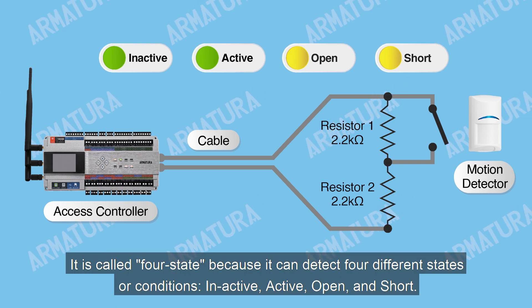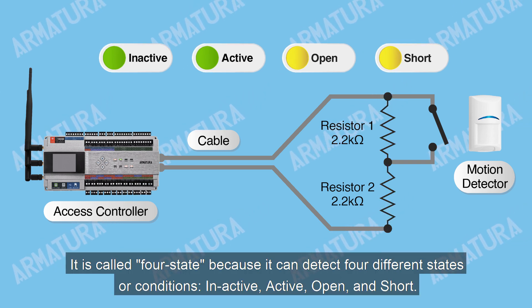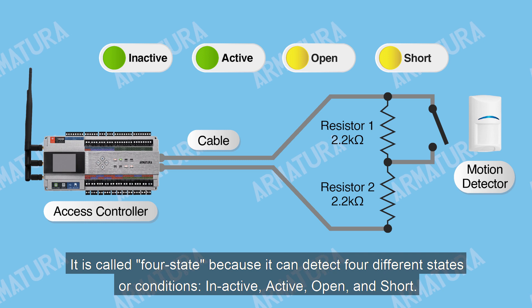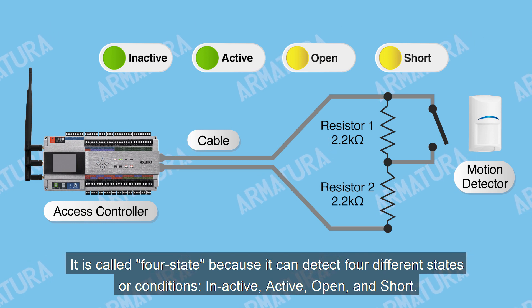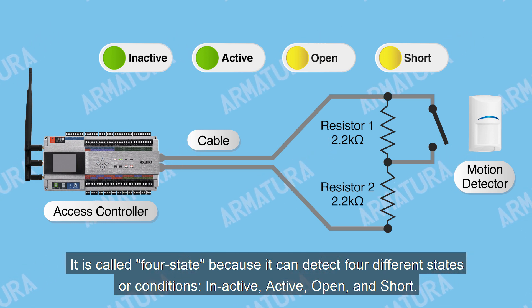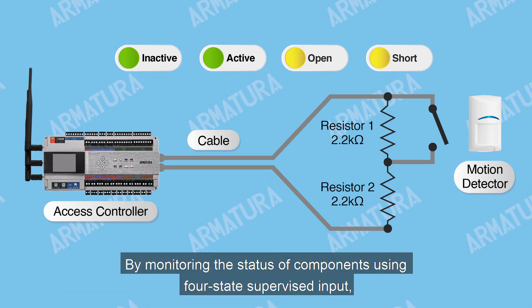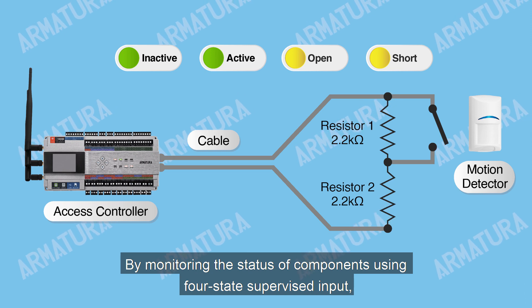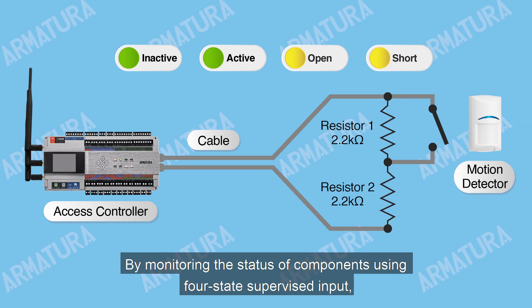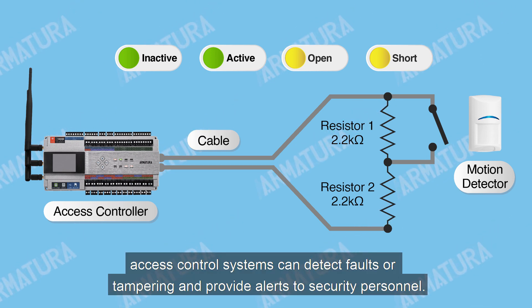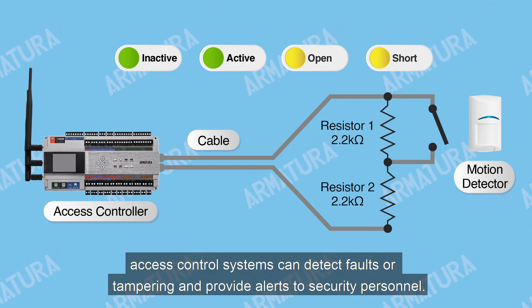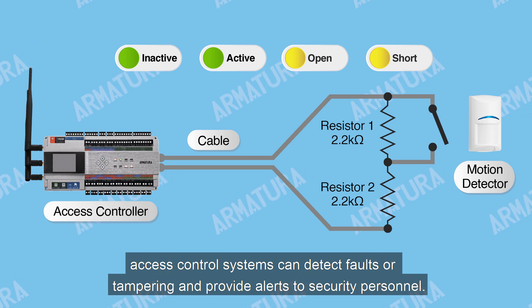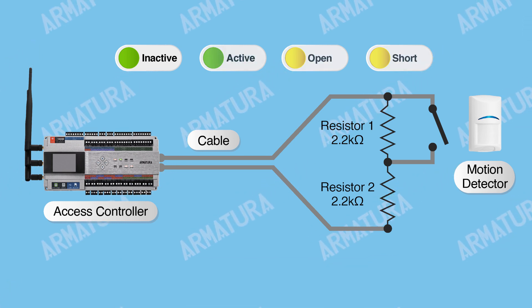It is called four-state because it can detect four different states or conditions: inactive, active, open, and short. By monitoring the status of components using four-state supervised input, access control systems can detect faults or tampering and provide alerts to security personnel.